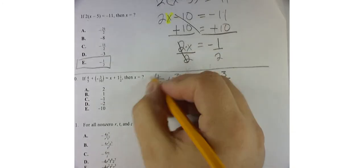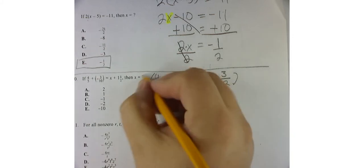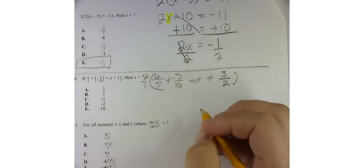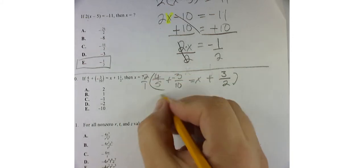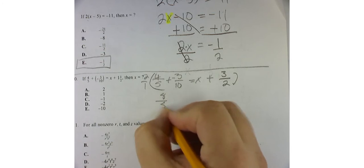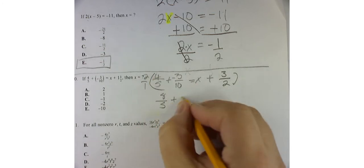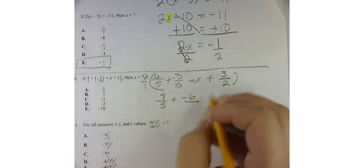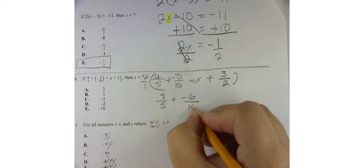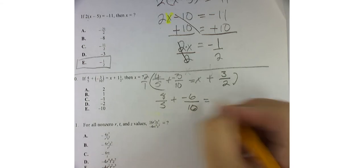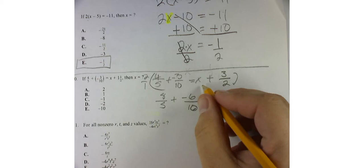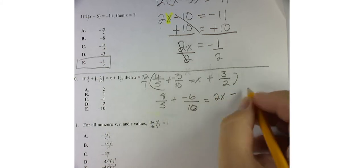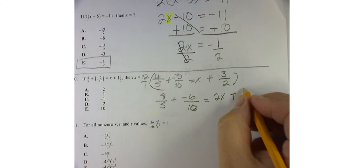So now what I'm going to do is I'm going to multiply everything by 2 over 1. So 2 times 4 is 8 over 5. 2 times 3 is negative 6 over 10. 2 times x is equal to 2x plus 6 over 2.